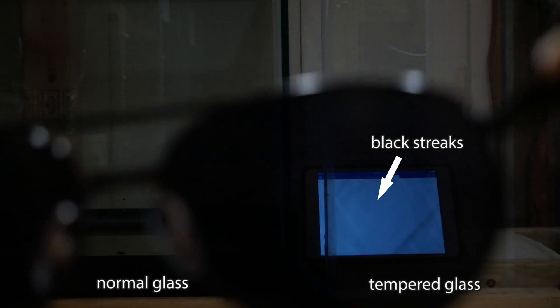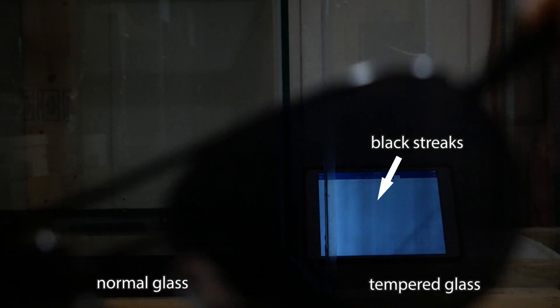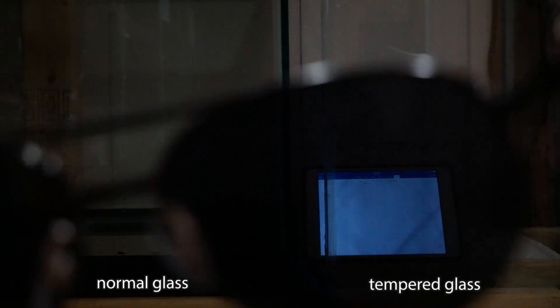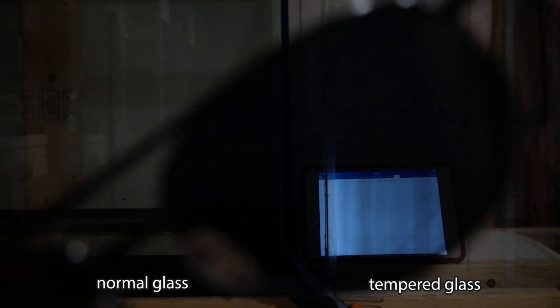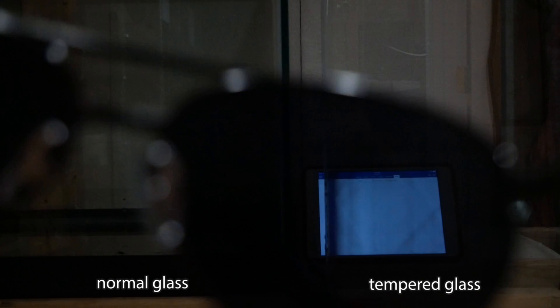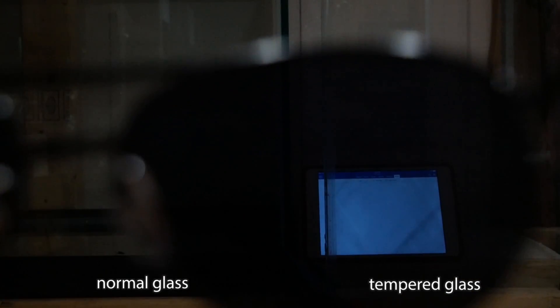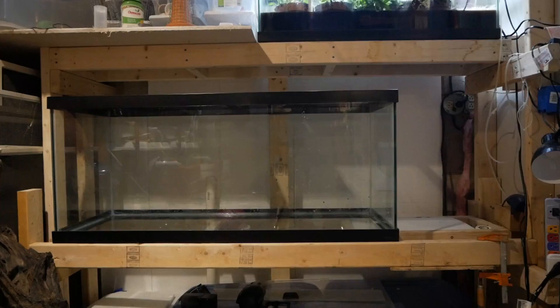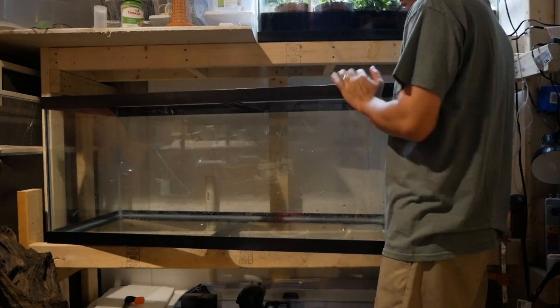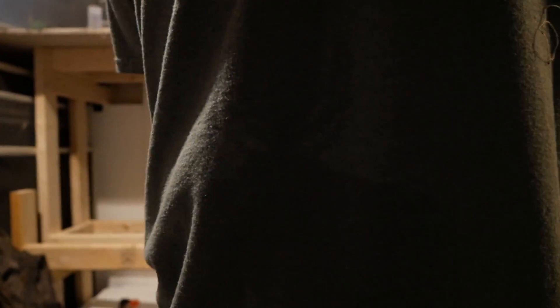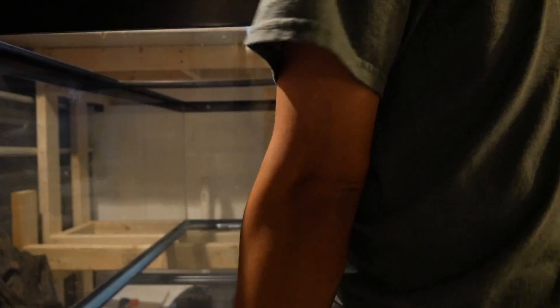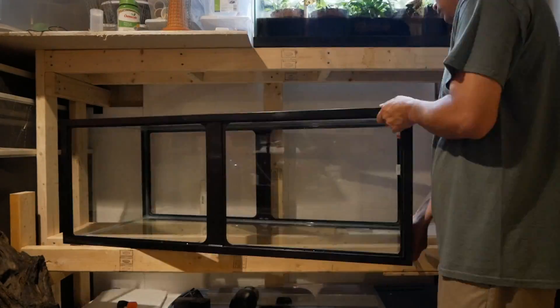This piece of glass on the right is actually from the 55 gallon that I shattered. So we know that is tempered glass and it's proven with the streaks. Now that we've verified that the 75 gallon has normal glass, I'm going to begin to set it up for drilling the overflow.